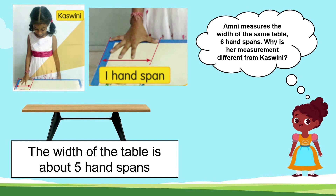Let's look at Kashmini — she is measuring the length of the table using hand span. The width of the table is one, two, three, four and five hand spans. Amni measures the width of the same table and gets six hand spans. Why is the measurement different from Kashmini's?